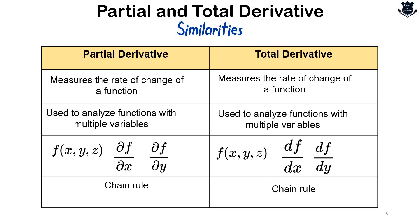So we have seen that partial and total derivatives share certain similarities — they use similar notation with a curly d for partial and a straight d for total. If you really want to know the origin of these symbols — d, curly d, delta, etc. — I have a popular video in my playlist called 'Difference between delta, d, and del' which you can watch on Physics for Students.